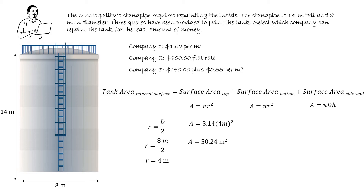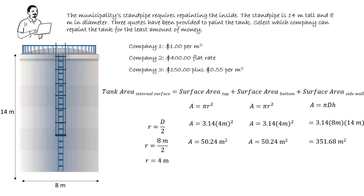The surface area of the bottom will be the exact same. And the surface area of the side wall will be pi times the diameter times the height — 3.14, multiplied by 8 metres for the diameter and 14 metres for the height, which is 351.68 square metres.